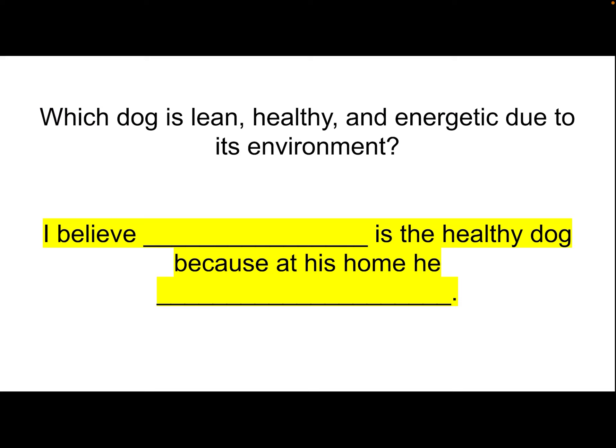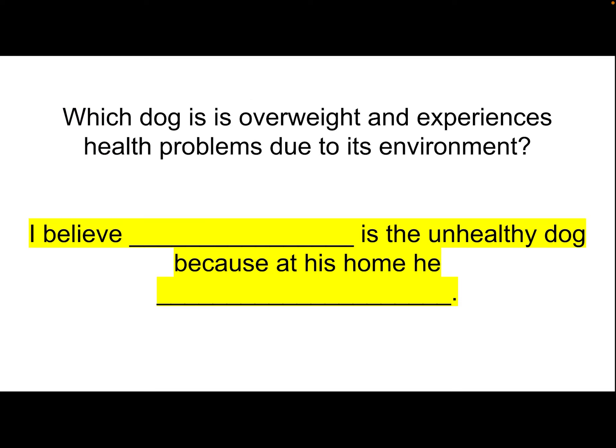Get a lined sheet of paper and fill in the blanks: 'I believe blank is the healthy dog because at his home he...' and explain what he does that makes him healthy. Pause the video until you have that sentence written. Then answer question two: 'Which dog is overweight and experiences health problems due to its environment?' Fill in: 'I believe blank is the unhealthy dog because at his home he...' Your paper should then have two sentences. Once both are written, end the video and type both sentences into the discussion board below. Good luck — make sure you use the sentence frames.